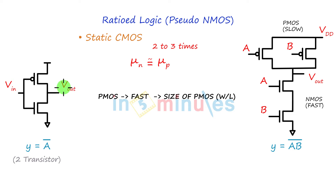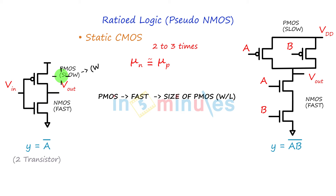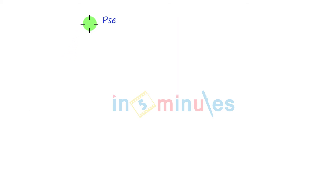So with PMOS being slow and NMOS being fast, you want to make both of them equal. To make both equal, simply increase the W by L of the slow transistor. But if we increase the W by L of PMOS, it will occupy a lot of area. PMOS is slow, and making it fast occupies even more area. So we come to a new logic family — pseudo NMOS circuits.